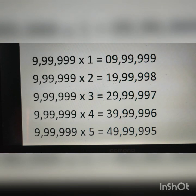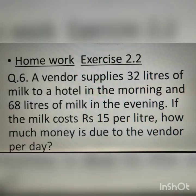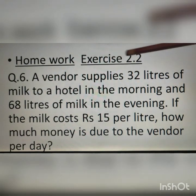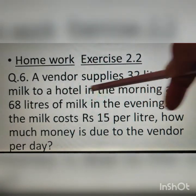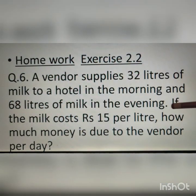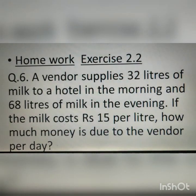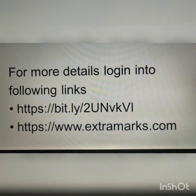Today we have discussed the remaining questions of Exercise 2.2 and also how whole numbers can be represented through various patterns, along with examples of observing and completing pattern series. Homework: NCERT textbook, Chapter 2, Exercise 2.2, question number 6 — a vendor supplies 32 liters of milk to a hotel in the morning and 68 liters in the evening; if milk costs rupees 15 per liter, how much money is due to the vendor per day? For more videos please log in to Diksha and Extra Marks.